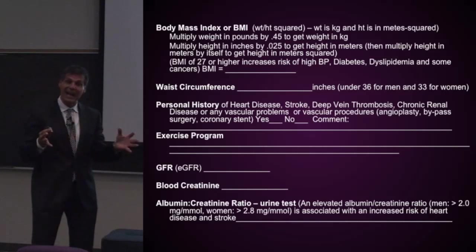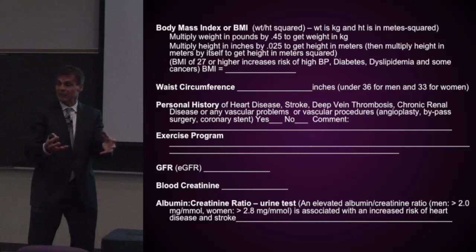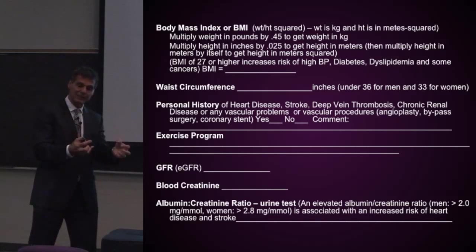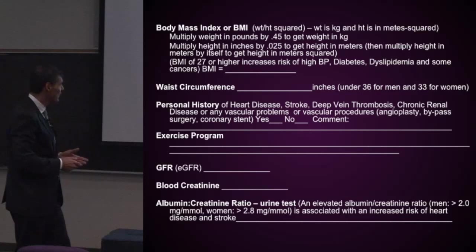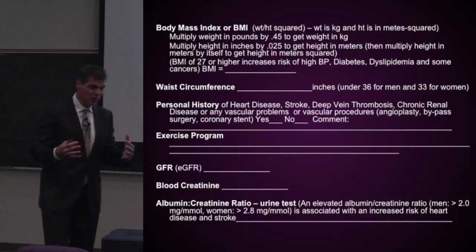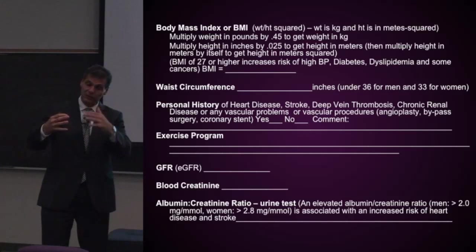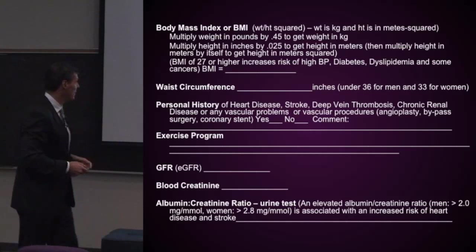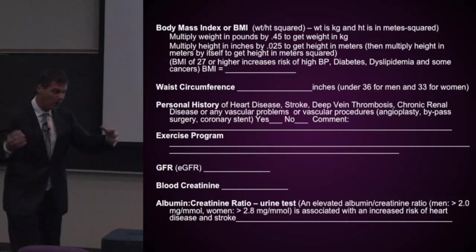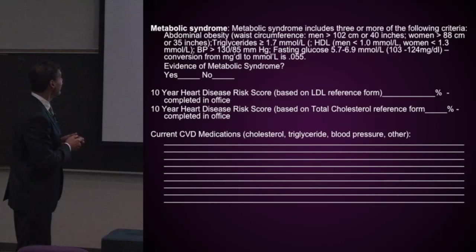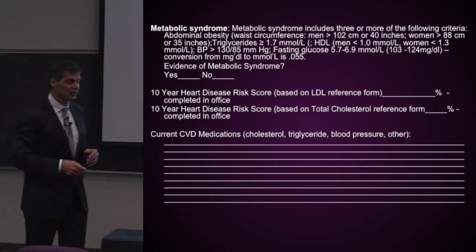Nephrologists use blood creatinine on a regular basis to determine whether kidney problems are progressing or have stabilized. Knowing the blood creatinine level and whether it's in the ideal range tells you if there's a hint of kidney problems, signaling that you need to be more aggressive in getting lipid levels even lower. And in the urine, you can measure the albumin-to-creatinine ratio — an elevated ratio indicates kidney problems behind the scenes. So knowing kidney function is important in the overall cardiovascular assessment.